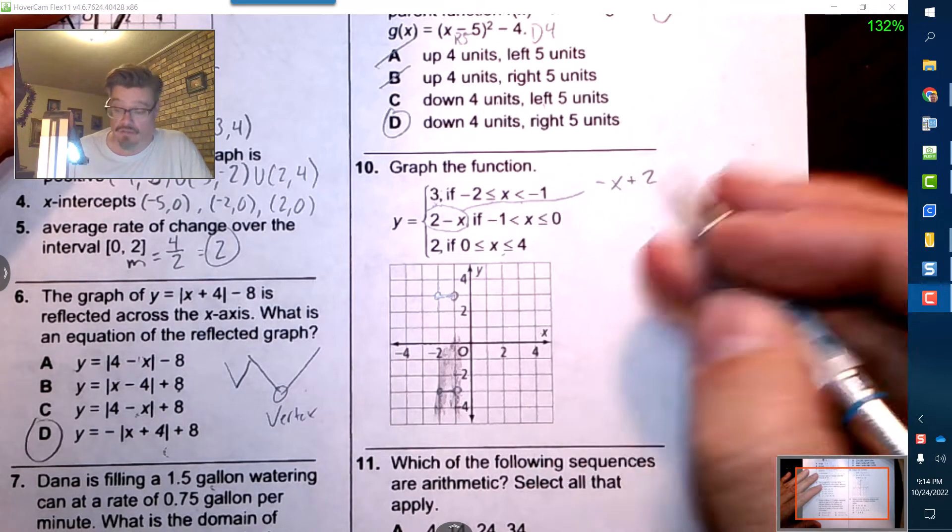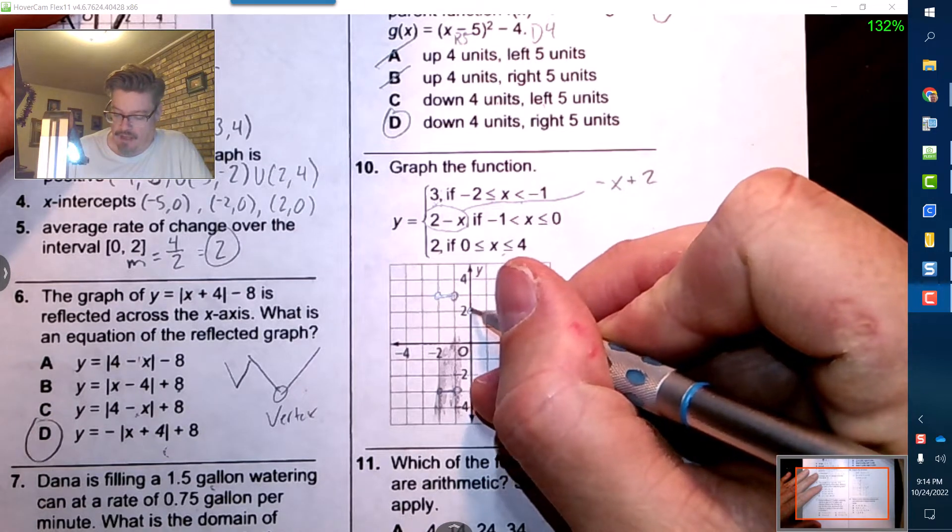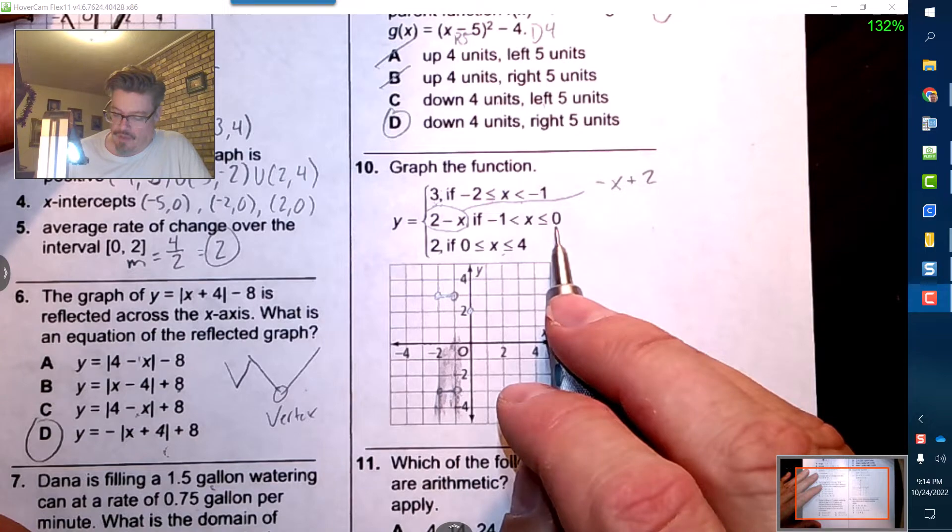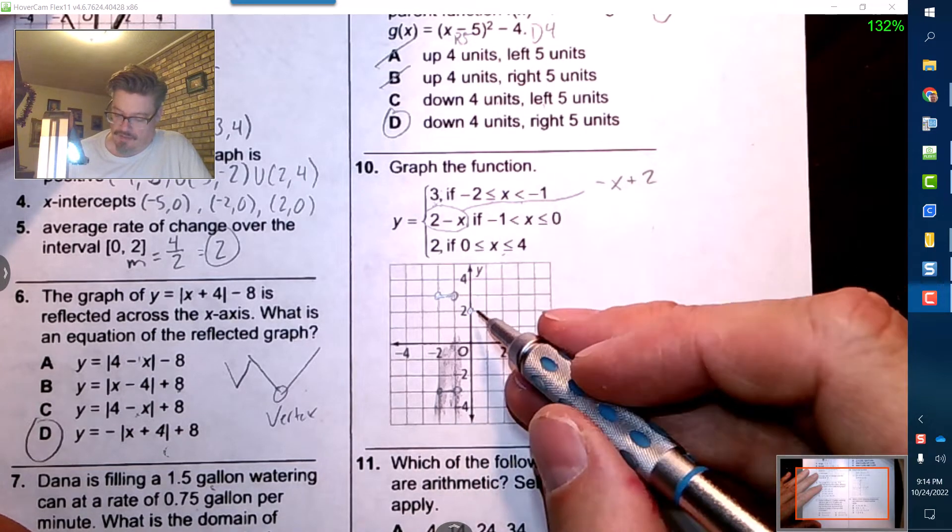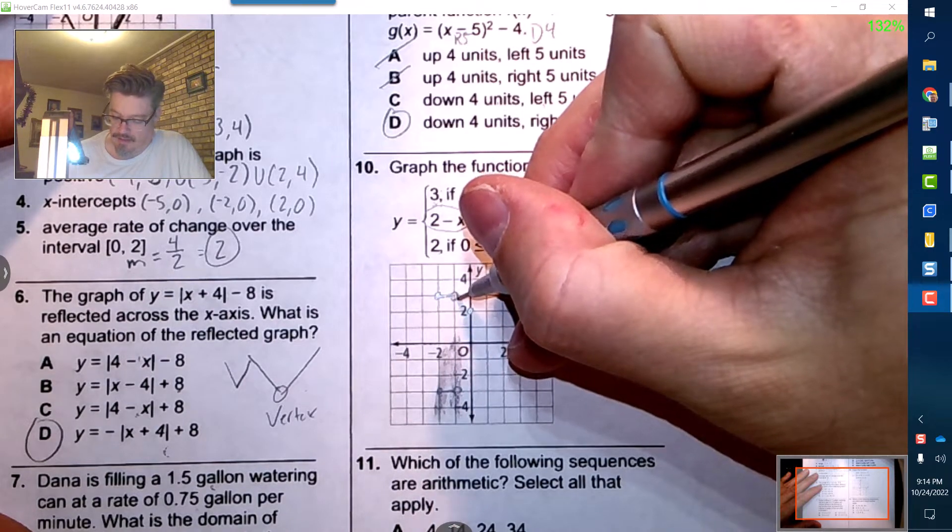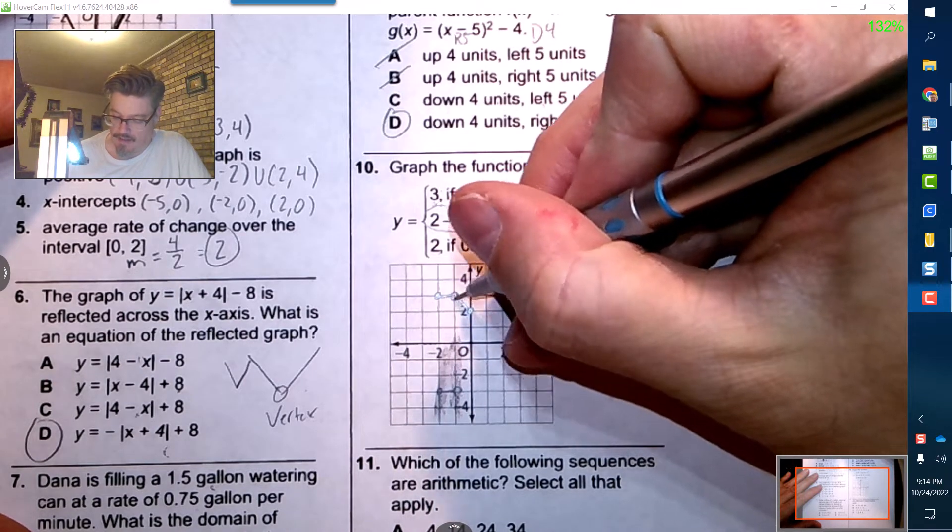So I go to 2, mark my dot, and that's going to go from negative 1 to zero. So it looks like negative 1 to zero is actually this right here.